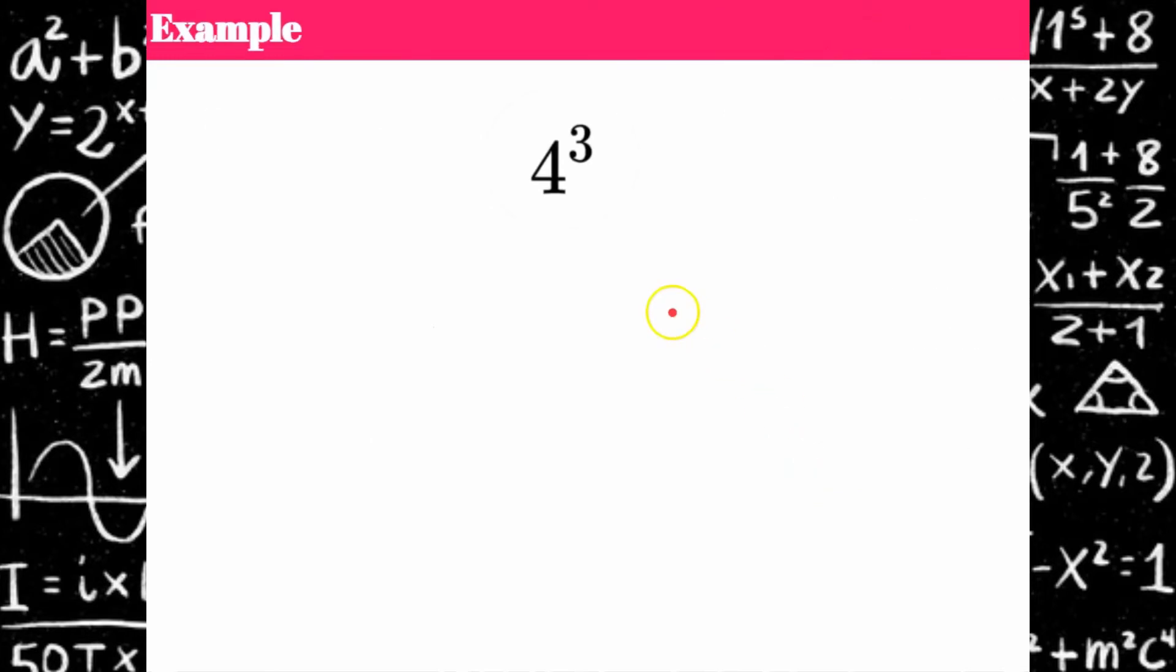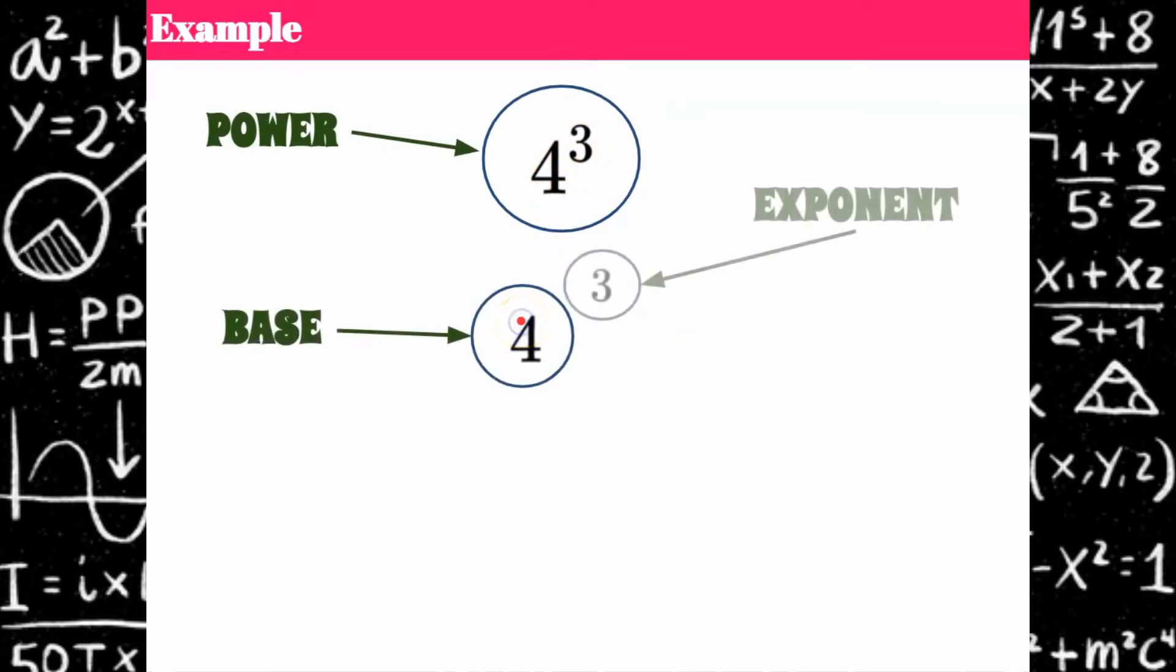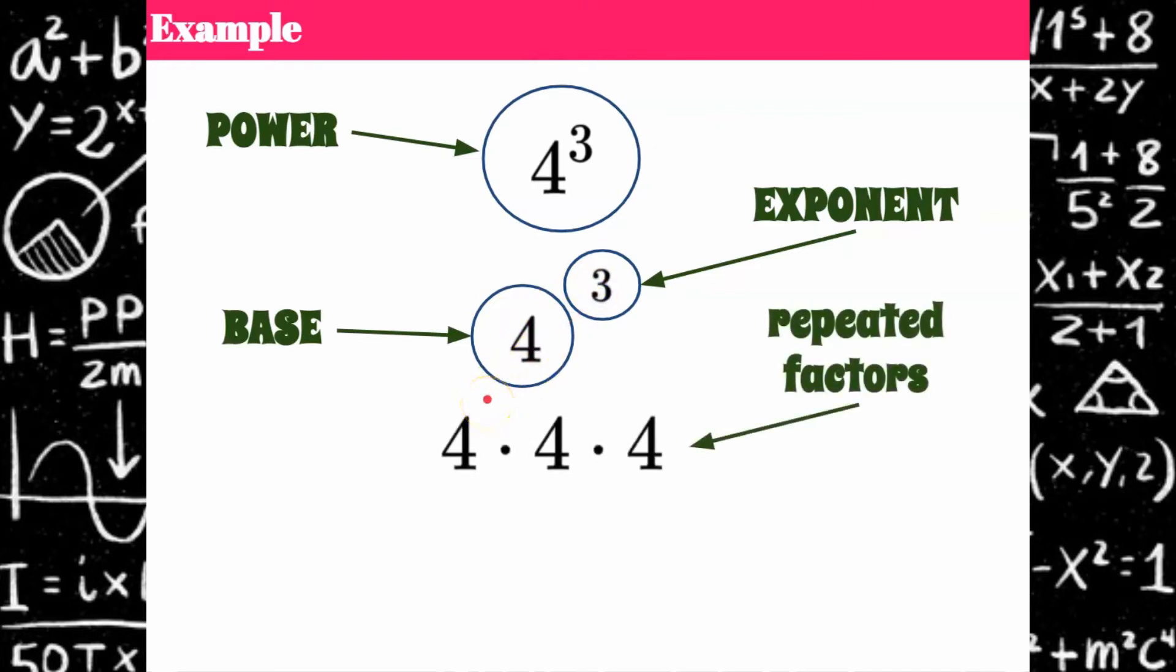So let's look at this. We have a power 4 cubed or 4 to the third. 4 is the base, 3 is the exponent. So our base is going to be multiplied by itself 3 times, and those are our repeated factors. 4 times 4 times 4. We multiply our product of our repeated factors. 4 times 4 is 16, 16 times 4 is 64.